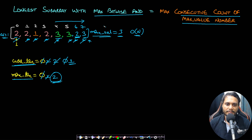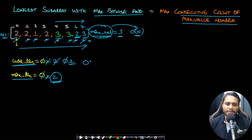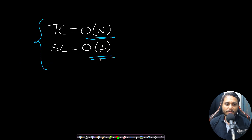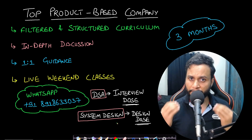In this entire process, we find the maximum value in O(n) and then do one more O(n) iteration, with no extra space used. Therefore, time complexity is O(n) and space complexity is O(1). I hope that's clear — let's now look at the code.